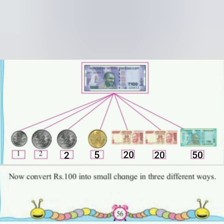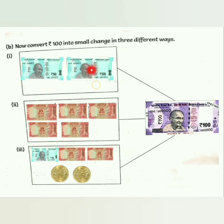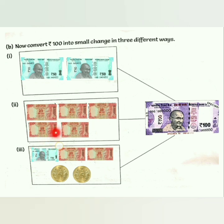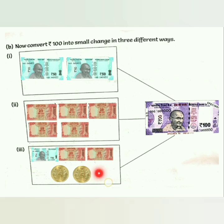Now convert Rs. 100 into small change in 3 different ways. First: 50 plus 50 is 100. Second: we have 5 notes of 20 rupees — 20 plus 20 is 40, 40 plus 20 is 60, 60 plus 20 is 80, 80 plus 20 is 100. Third: 50 plus 20 is 70, 70 plus 20 is 90, 90 plus 5 is 95, 95 plus 5 brings the total amount to 100 rupees.